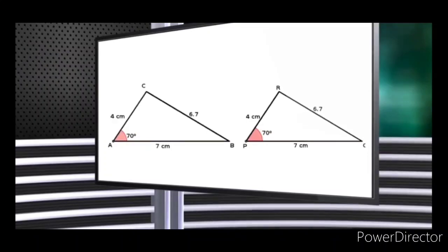One triangle has 2 sides: 7cm and 4cm. The opposite sides are BC and RC. So BC = 1.7 and RC = 1.7. One triangle has 2 sides and the other has 2 sides. This triangle has 3 sides and we will prove that.